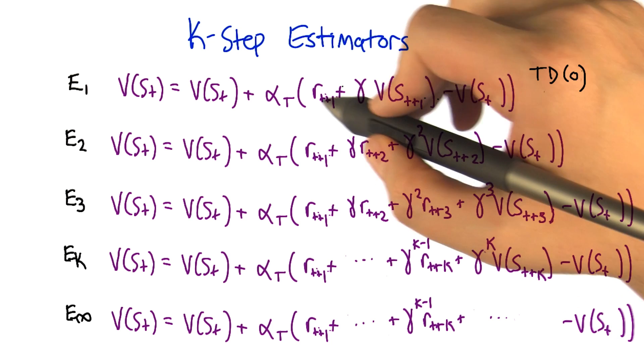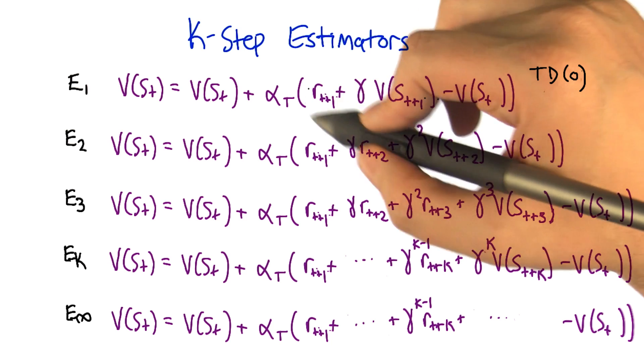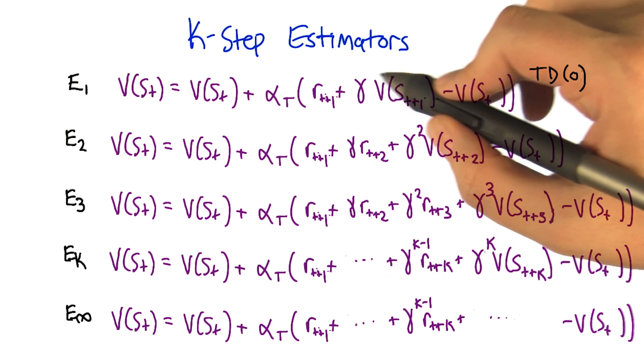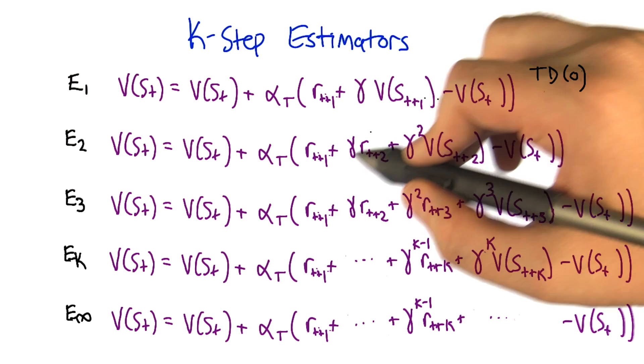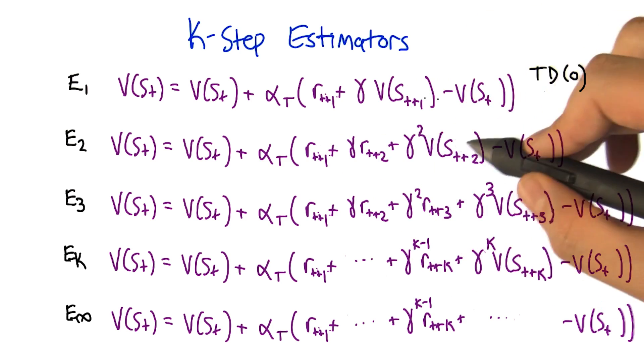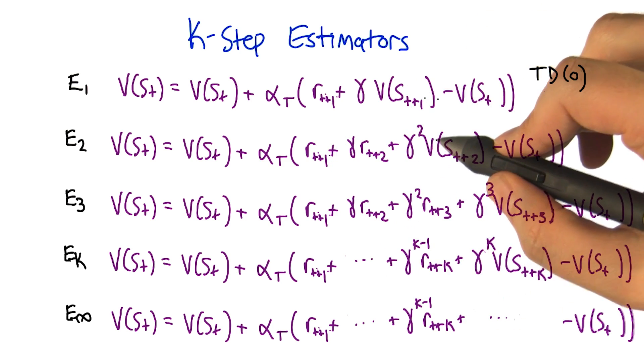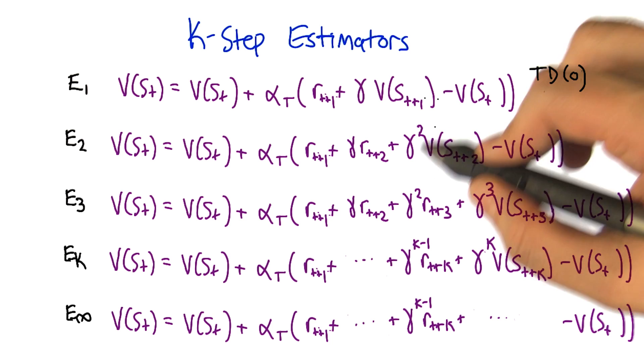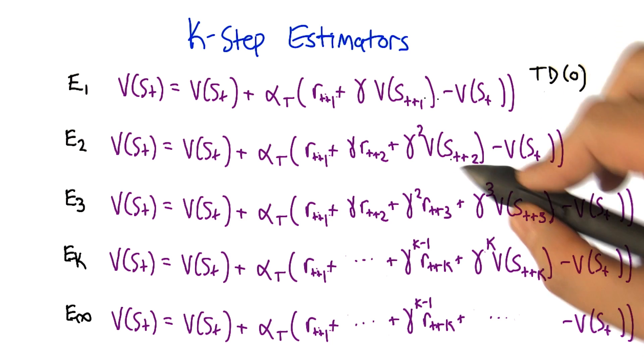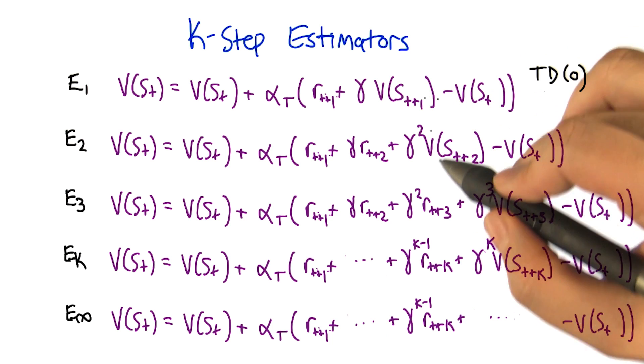So now instead of where before we did an estimate by taking one reward and we estimate the rest of the sequence using our current estimates. Here we're taking two rewards and using that as our immediate estimate plus our estimate of the future taken as the state that we reached two steps from now. So does that make sense kind of as an extension of that idea?